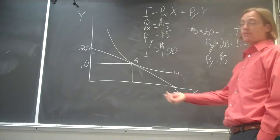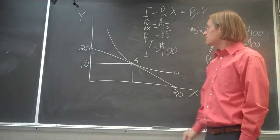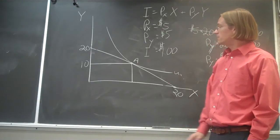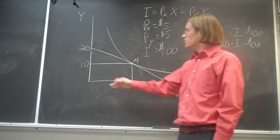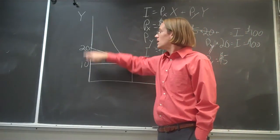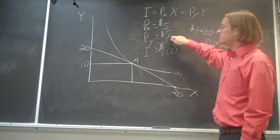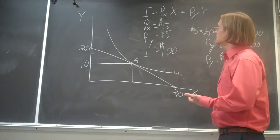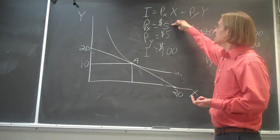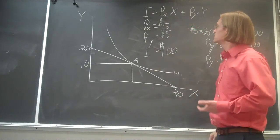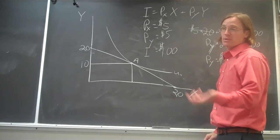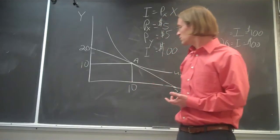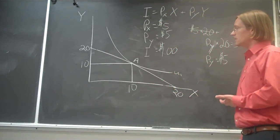So now if we're at point A, how many units of X can we purchase? Well, if we've got 100 bucks and we're buying 10 units of Y at 5 dollars a piece, then we've got 50 bucks left over. And if the price of X is also 5 dollars, then if we use that 50 bucks to buy good X, then we should be able to buy 10 units of good X.